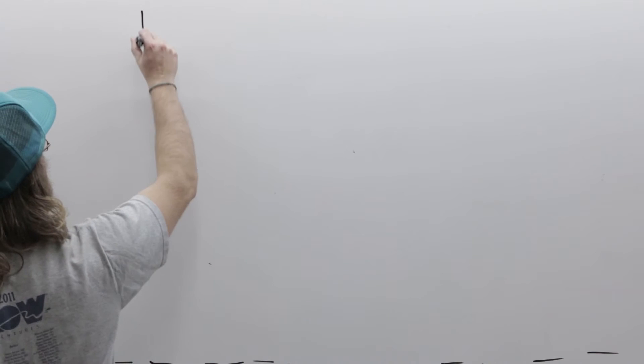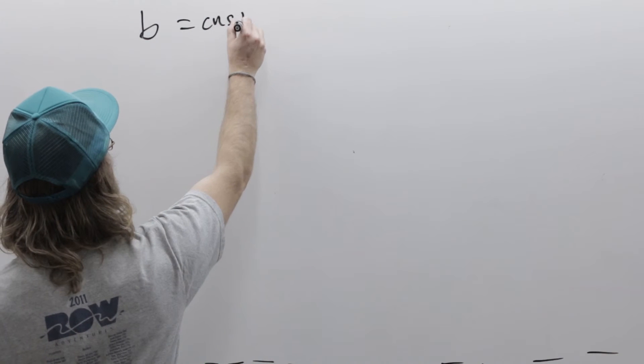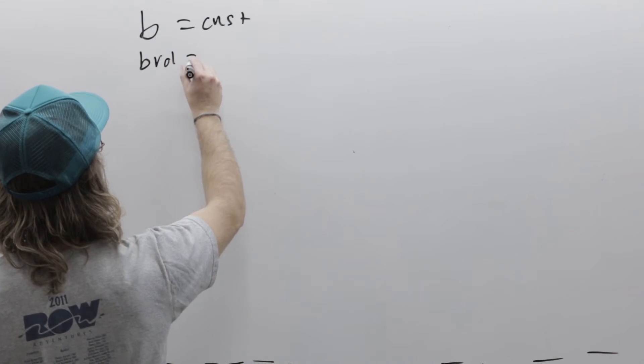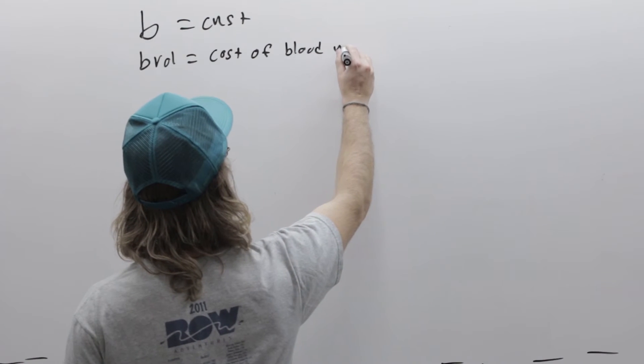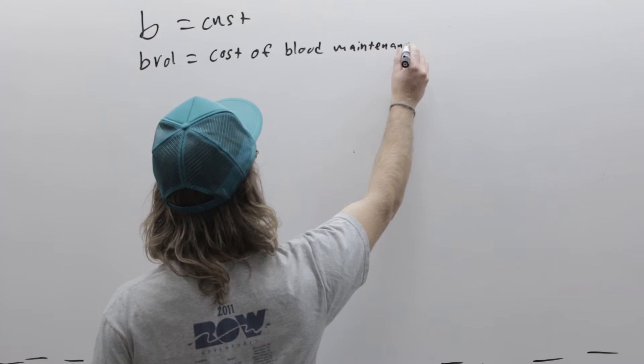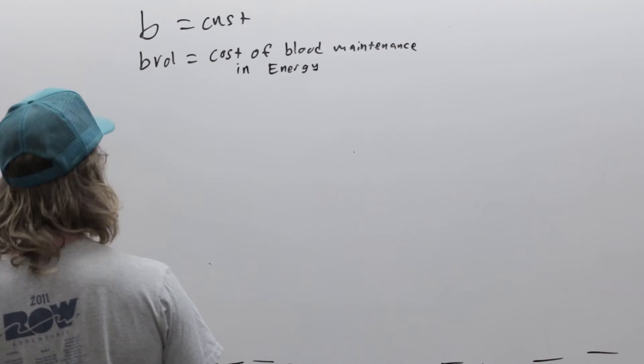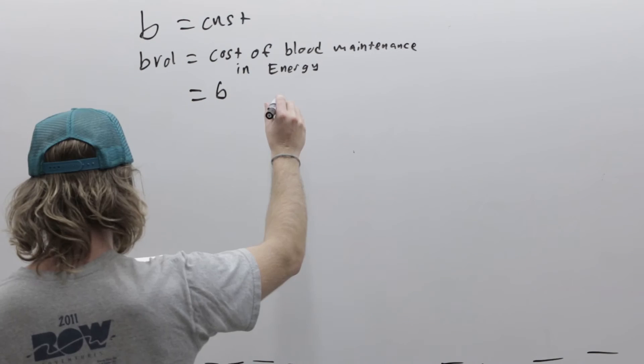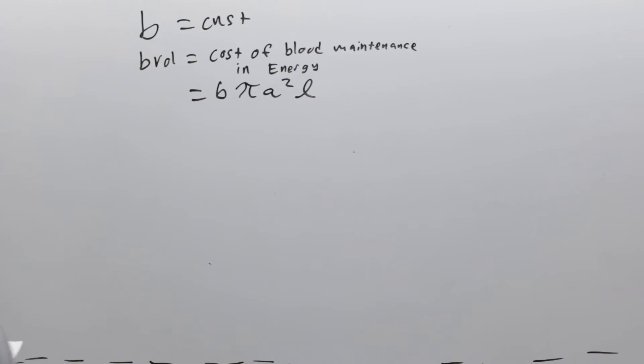So now we want to consider the blood volume cost. We're going to say that b is a constant that describes the cost of maintaining a certain volume of blood. b times volume equals cost of blood maintenance in energy, which equals b times πa²L.